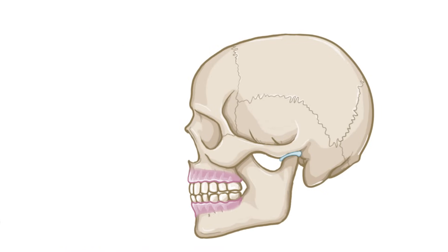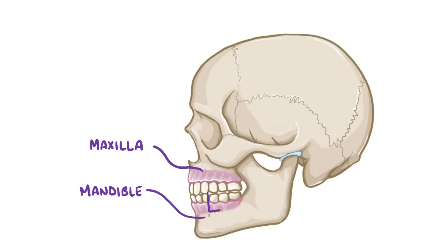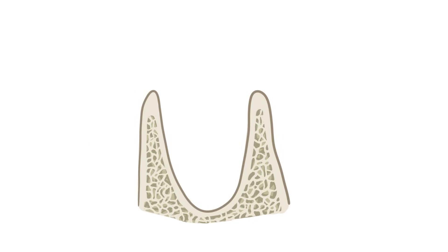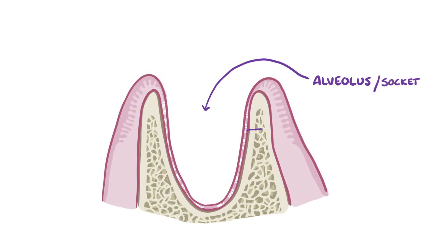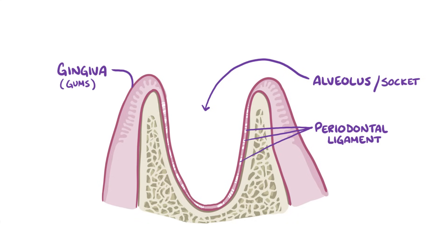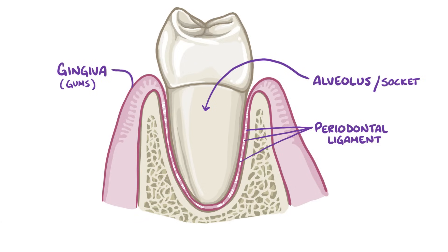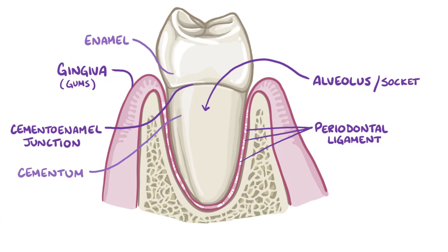Let's start by building a model of a tooth and its surrounding structures. In the mouth, the bone beneath the bottom row of teeth is the mandible, and the bone above the top row of teeth is the maxilla. Both bones have an alveolus, or socket, for each tooth. The socket is lined on the inside by a periodontal ligament. Protecting the alveolus on the outside is a layer of soft, supportive tissue called the gingiva, or gums, that sits on top of the bone and covers the root surface from the bone to the cementoenamel junction, where the cementum and enamel come together.